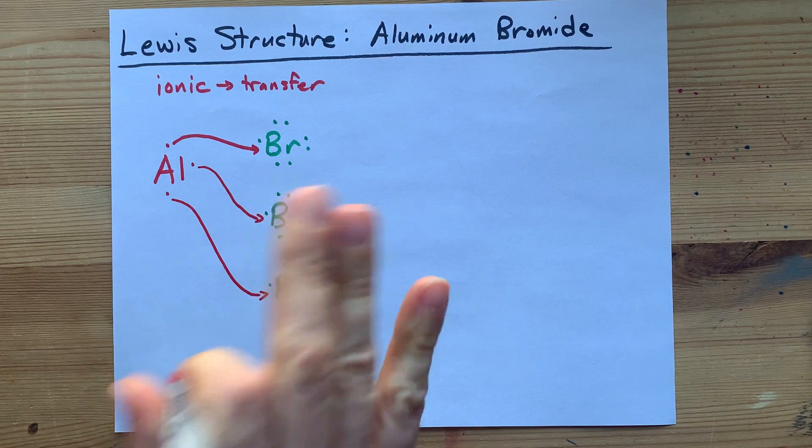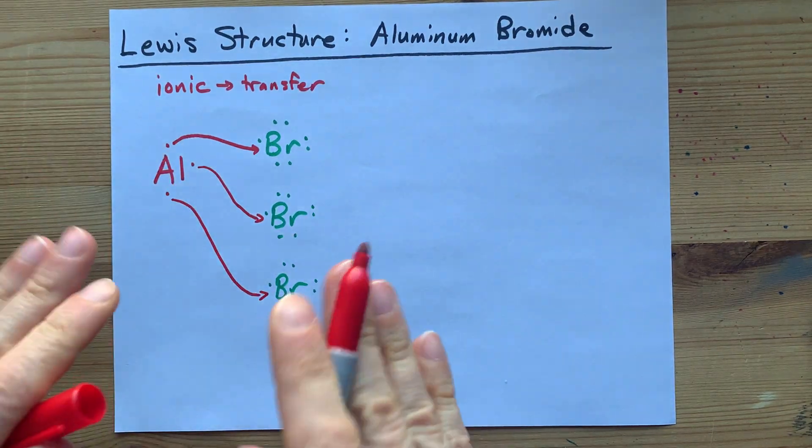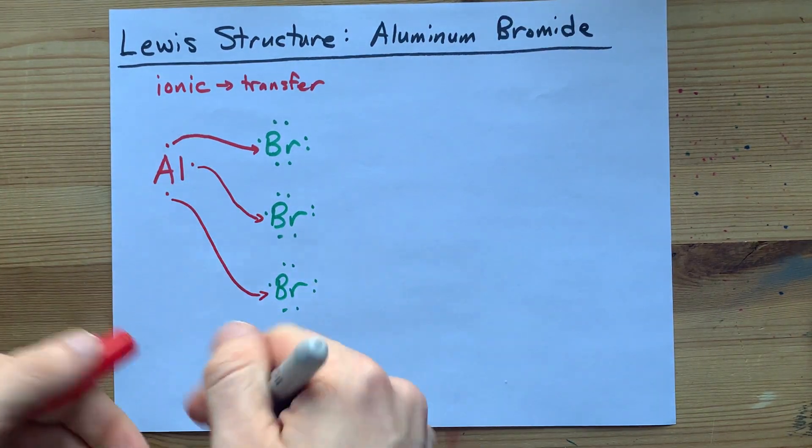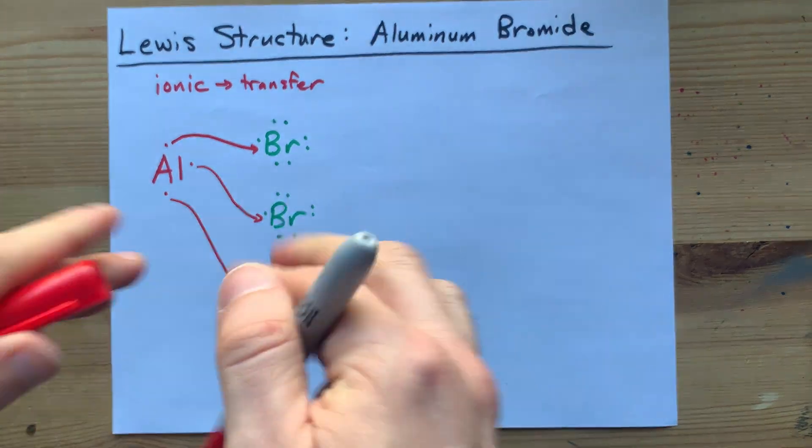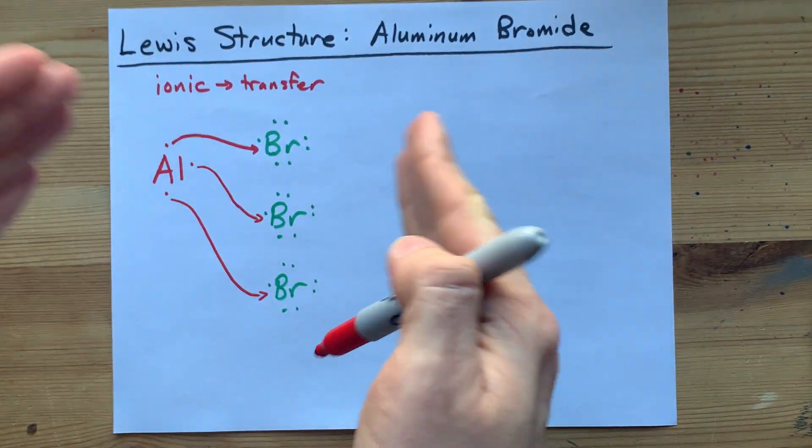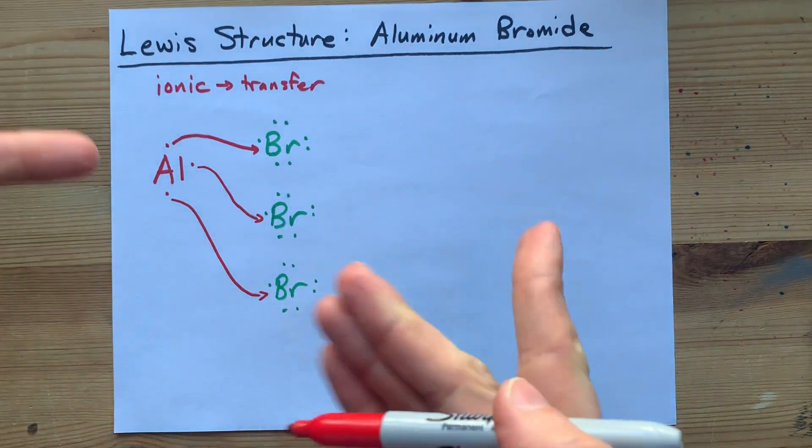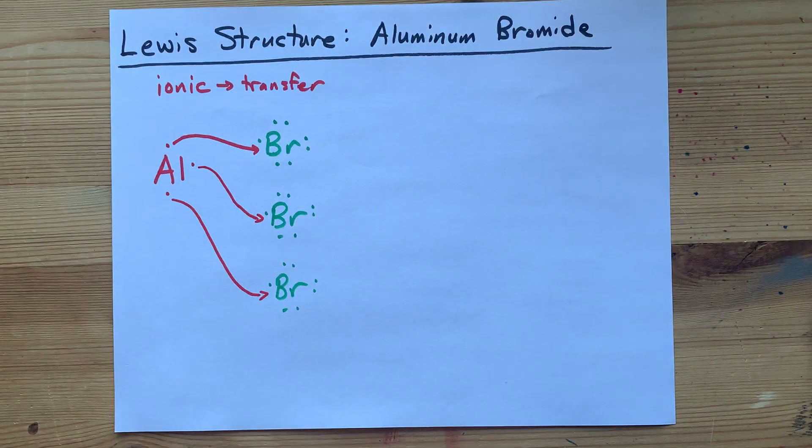And a third. Now, I got some bromines, and they all have 8 electrons. I got aluminum, which has none left. That means its new outer shell is the one that's not shown, and it's full by default. So he's stable, too.